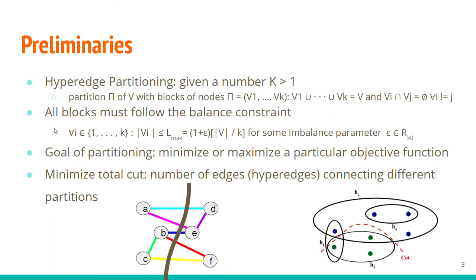In this talk we're interested in hypergraph partitioning. Given a number K, we want to partition our hypergraph into K blocks where each node only appears in one of the blocks, and we also want to make sure that all blocks follow the balance constraint. The goal is to minimize a particular objective function — here, we minimize the total cut, or the number of edges that connect different partitions.